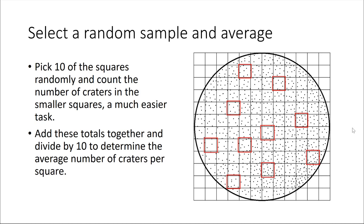Once you have the number of craters in each of these individual squares, add up those numbers together, and then divide your total by 10 to figure out the average number of craters per square.